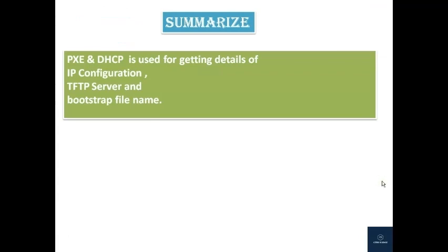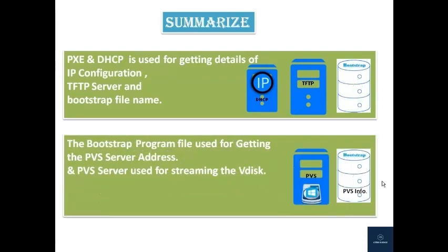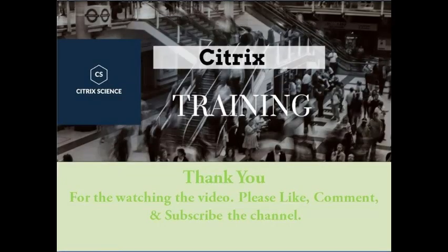To summarize: PXE and DHCP are used for getting IP configuration details, TFTP server address, and bootstrap file name. The bootstrap program file is used for getting the PVS server address, and the PVS server is used for streaming the vDisk. In this video we covered PVS basics. In upcoming videos we will cover PVS configuration, PVS management, and troubleshooting PVS issues. Thank you — if you like the video, please like and subscribe to the channel.